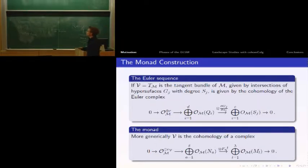We have line bundles with certain degrees that correspond to the degrees of our homogeneous hypersurfaces. The monad is similar, but we can put basically any line bundle here and take the cohomology of the complex to get our holomorphic vector bundle.